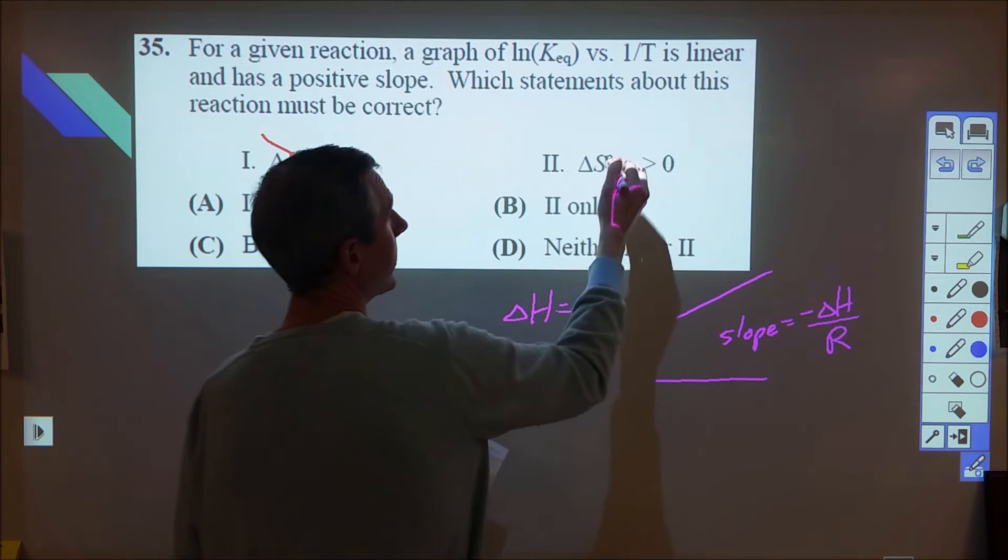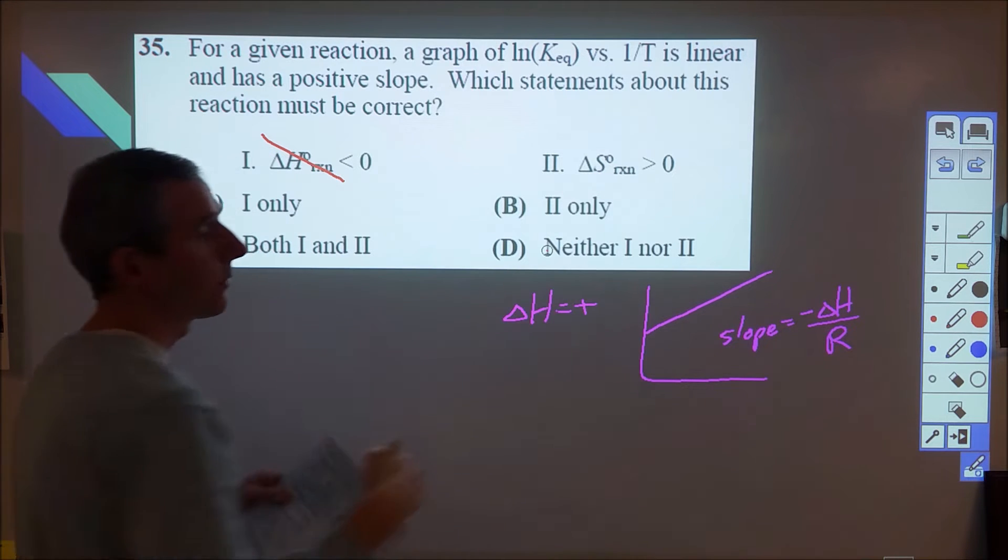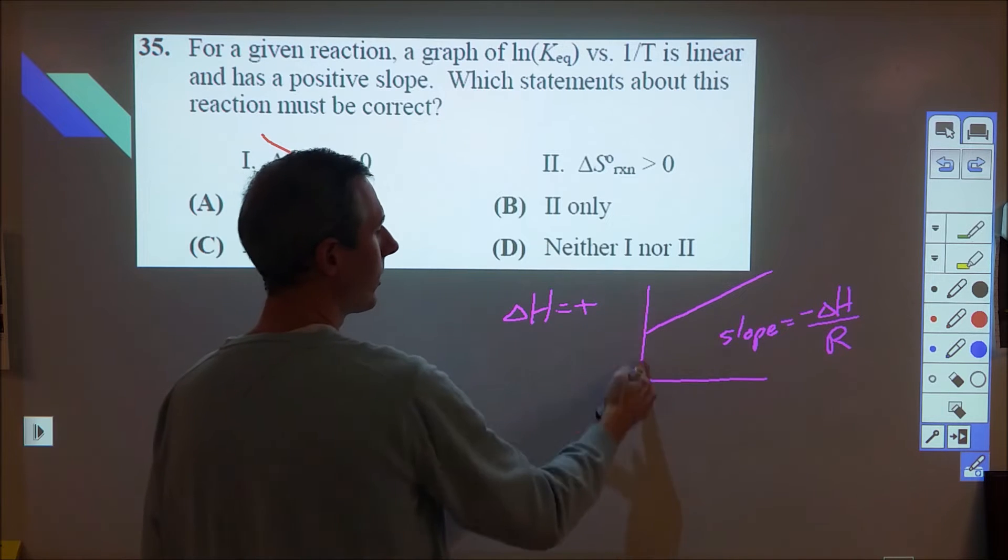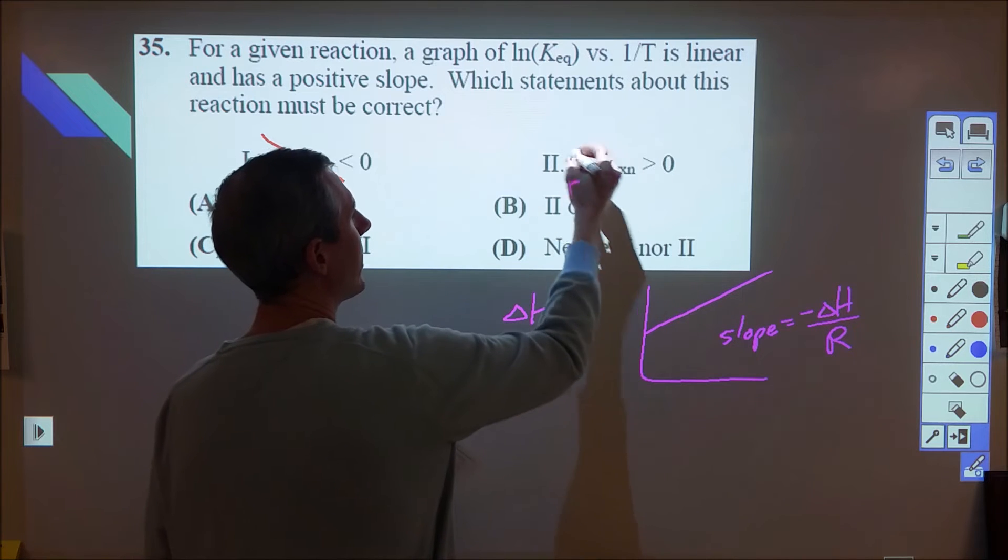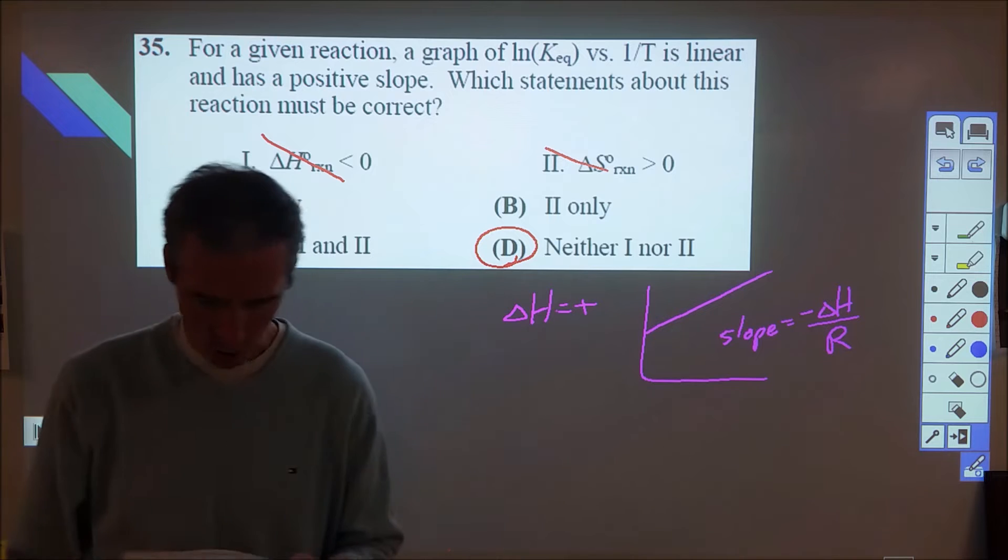The second part says that we know that delta S is positive. So since we know this, we might be able to infer some information about this, but we don't know what the delta G is. And so that limits, because we don't know what our equilibrium constant is anywhere, and we don't know whether this is spontaneous or not. So we really can't gather any information about that, and then we're looking at D being the best choice.